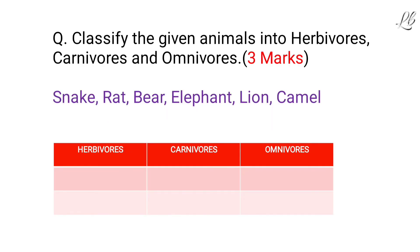Classify the given animals into herbivores, carnivores, and omnivores. A list of animals is provided. The child can put each animal in the right box — herbivores, carnivores, or omnivores — depending on their understanding of the three terms.